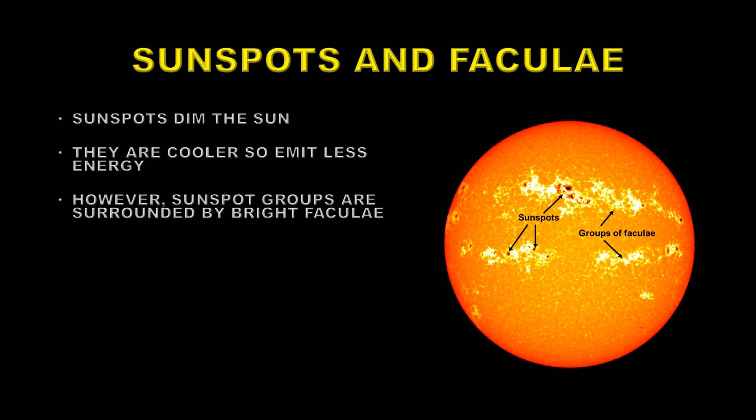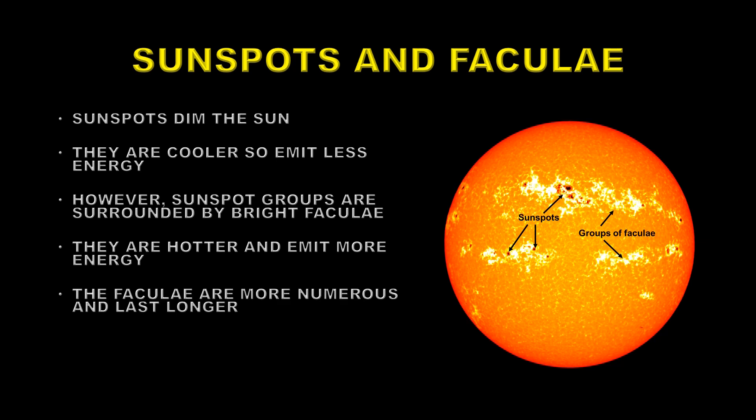However, sunspot groups are always surrounded by bright faculae. These are areas that are hotter and emit more energy. And as you can see, the area of the faculae and the extent of the faculae is much greater than that of the sunspots.